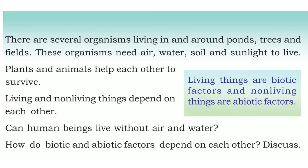Frogs, squirrels, earthworms, and snakes — several organisms live in our surroundings, which include ponds, trees, and fields. All organisms need air (oxygen), water, soil, and sunlight to live. Plants and animals can survive only by helping each other. Living and non-living things are dependent on each other — for example, humans cannot survive without water.